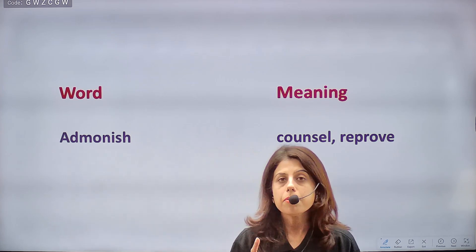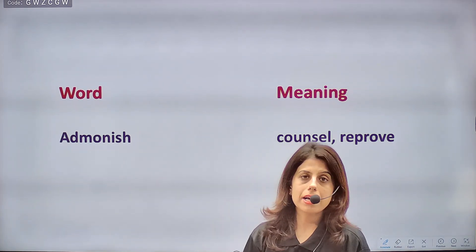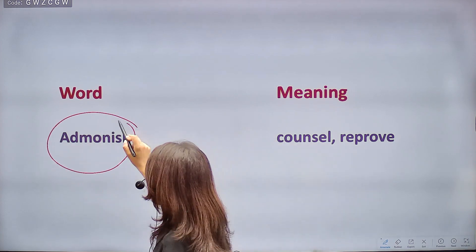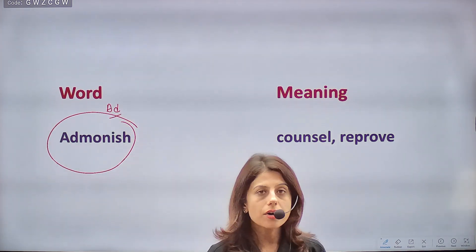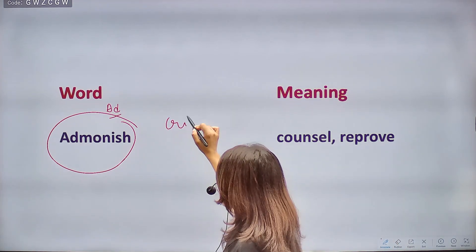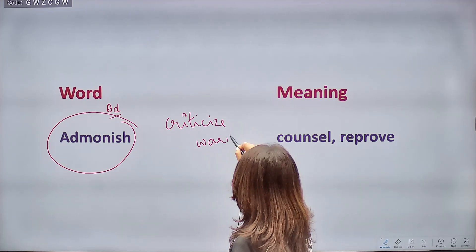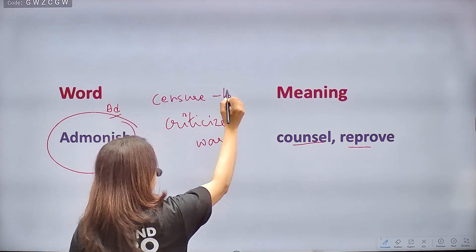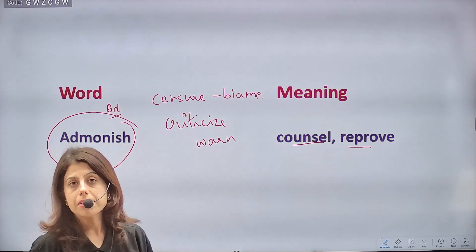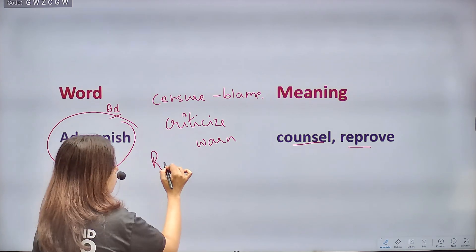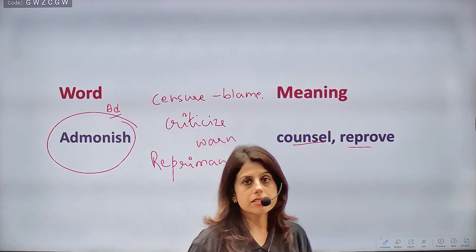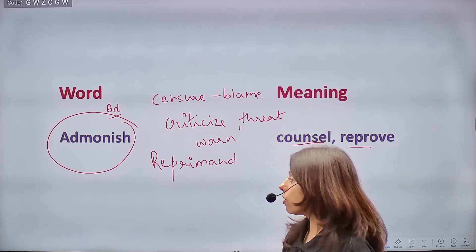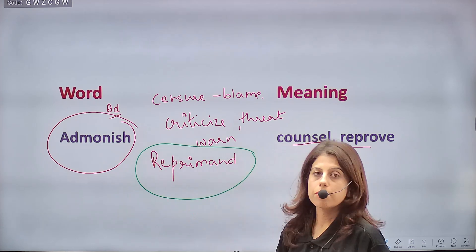Next word is ADMONISH. Note that root words apply to most words but there are exceptions. Admonish is one such exception — even though it has 'ad', its meaning is not 'join'. Admonish means to criticize someone, to scold, to threaten, to warn. Synonyms: counsel, reprove, censure (meaning to blame someone). A very important synonym from past years is REPRIMAND — please learn this word as it appears frequently in exams.